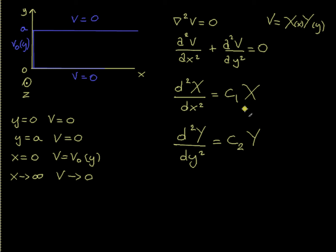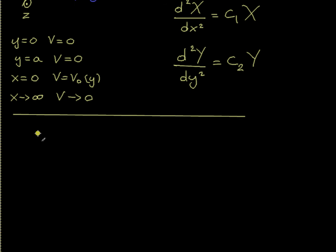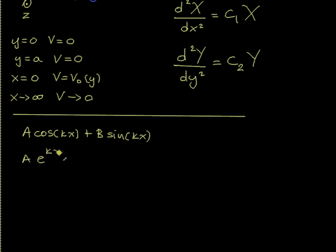This is the part that is new, and this is the part of the problem where the more problems you do, the more familiar you will be with whether to make the constant c1 and c2 positive or negative. Two solutions are possible depending on the sign — one is sinusoidal and the other is an exponential.